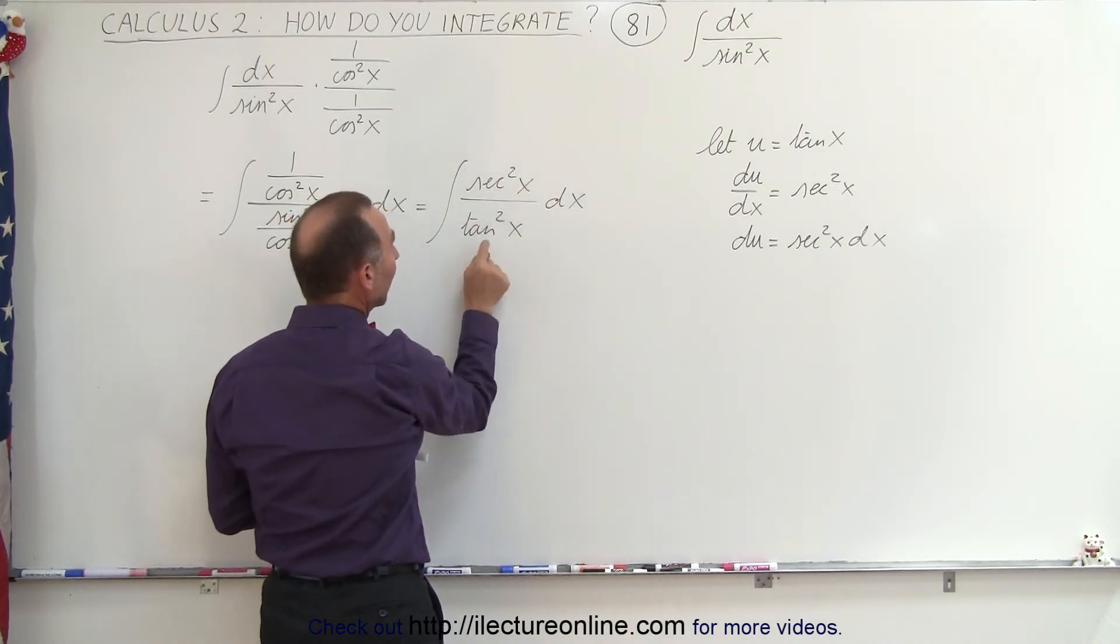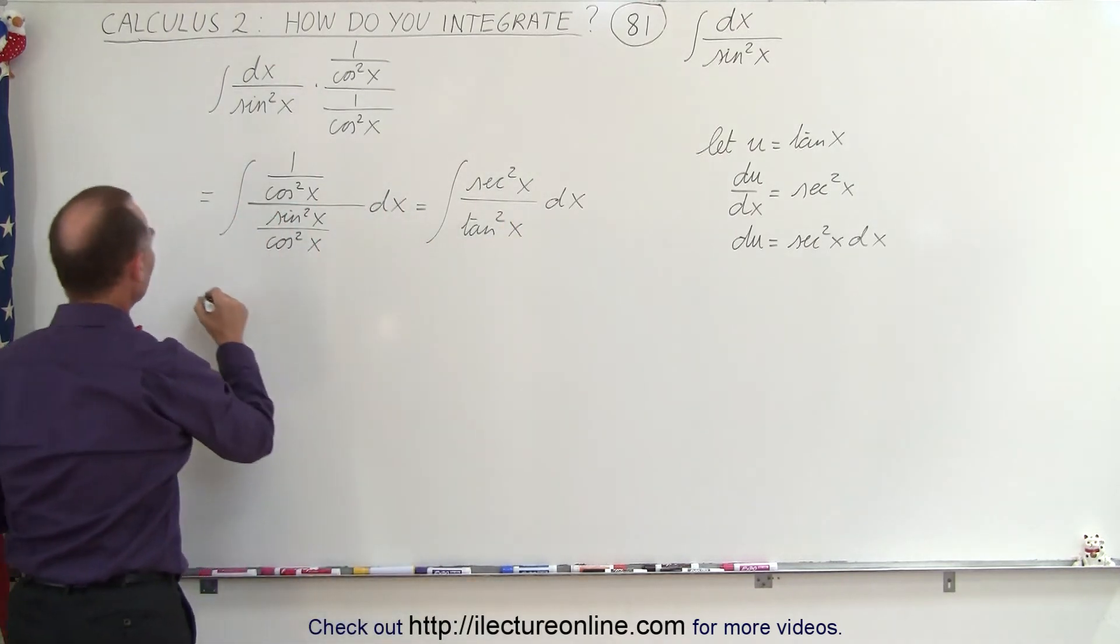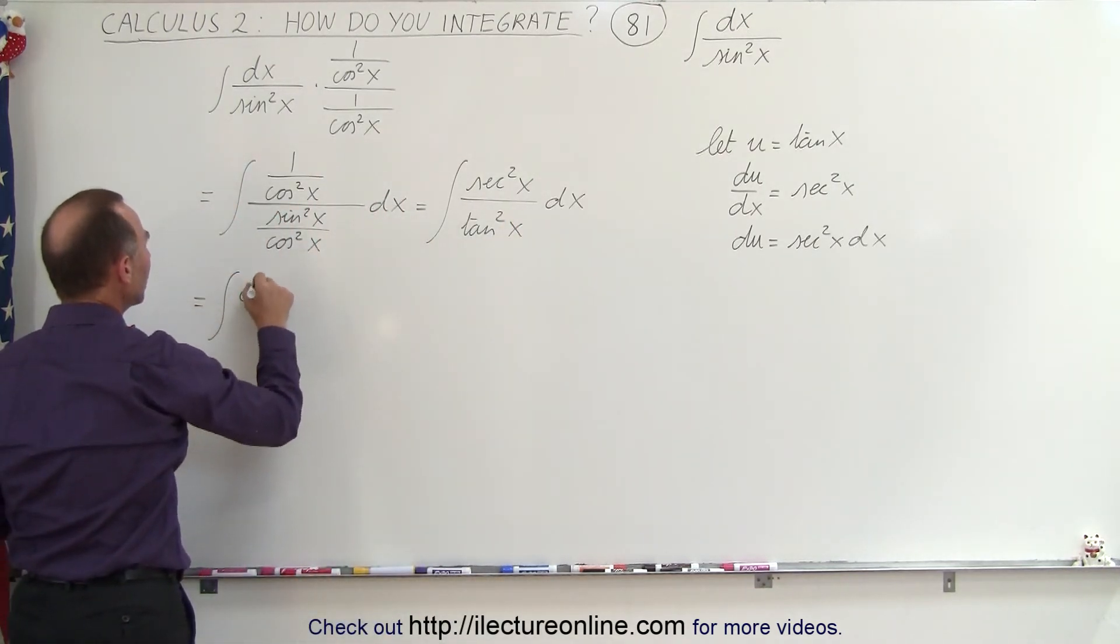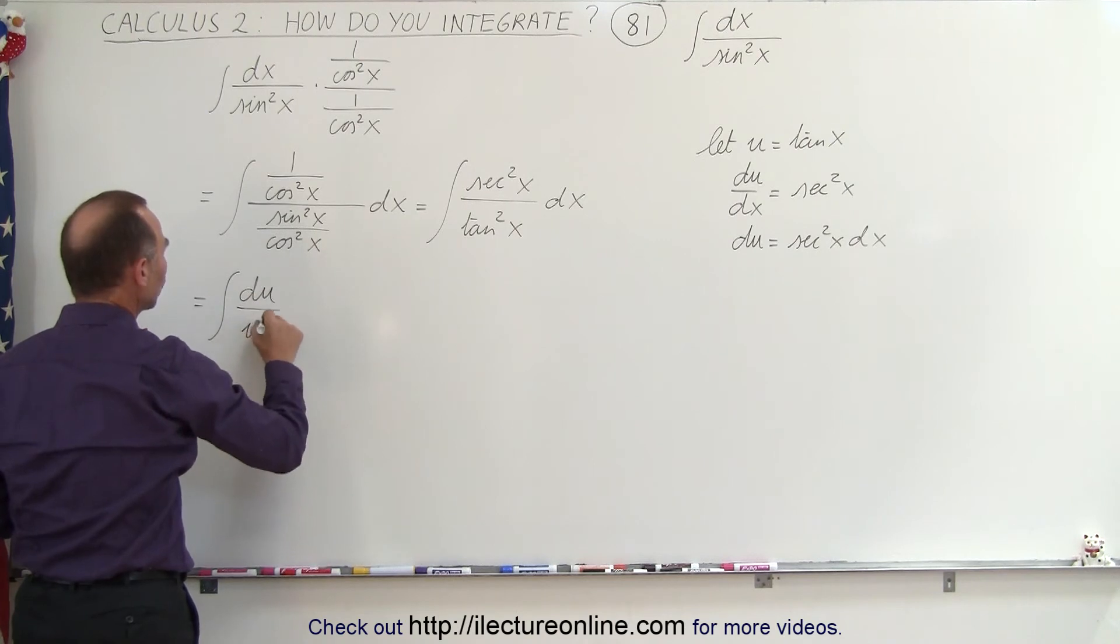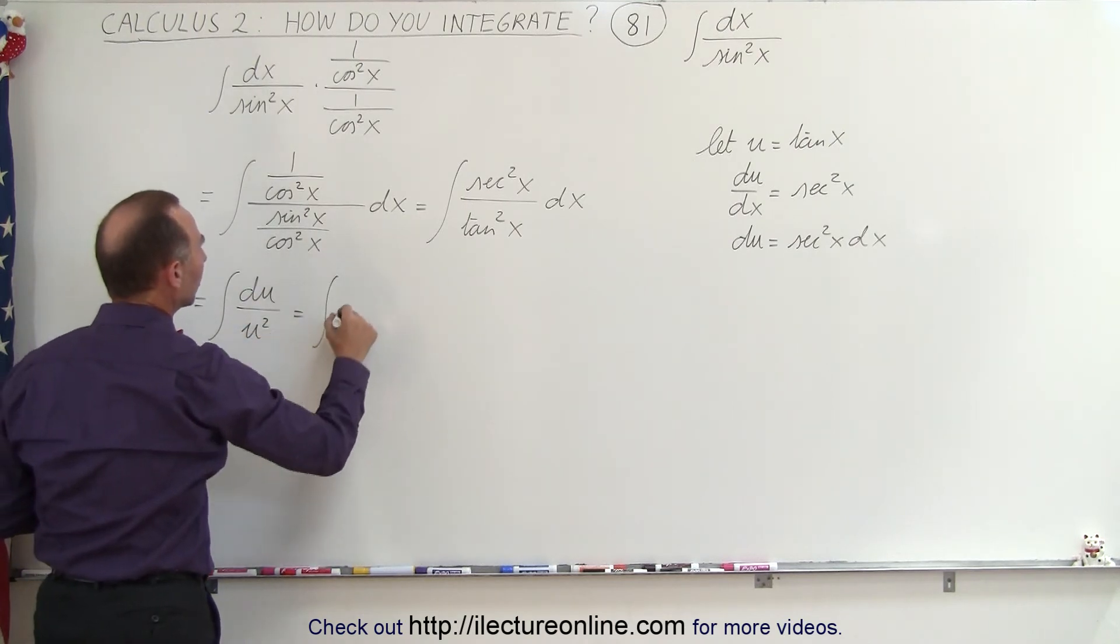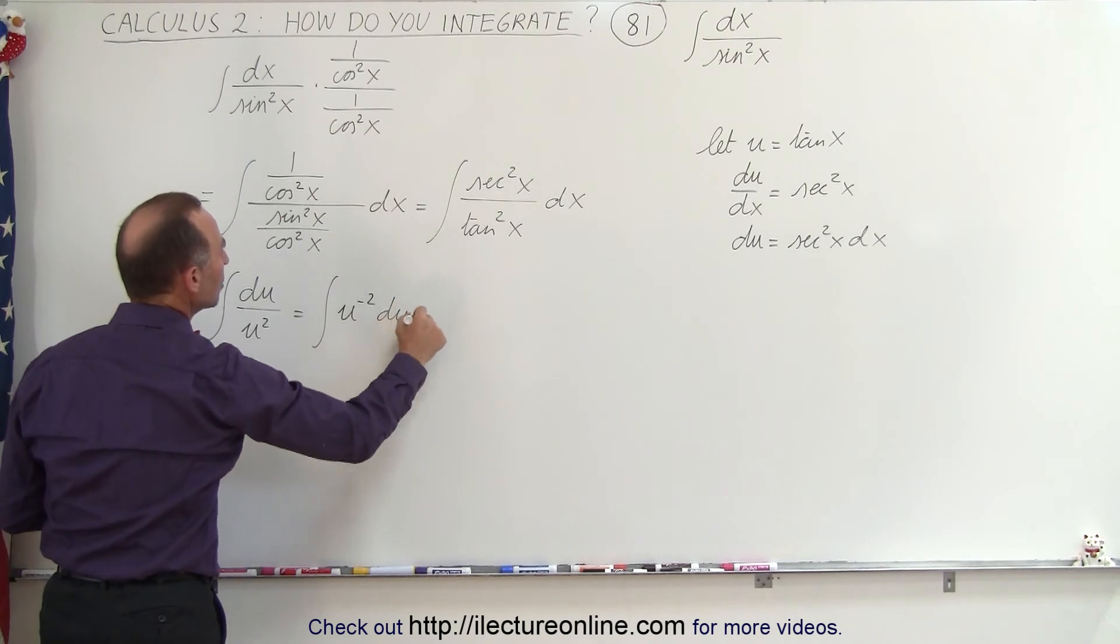And in the denominator we have u squared. So this can now be written as the integral of du divided by u squared, or the integral of u to the minus 2 du.